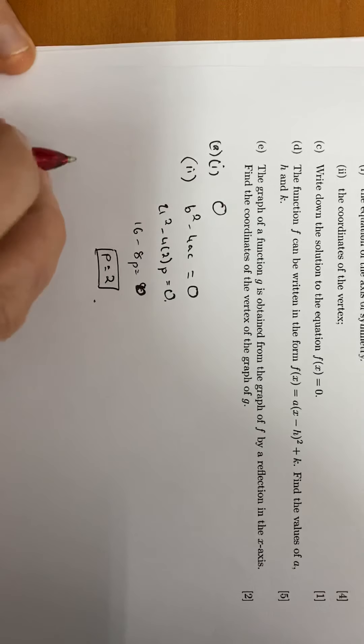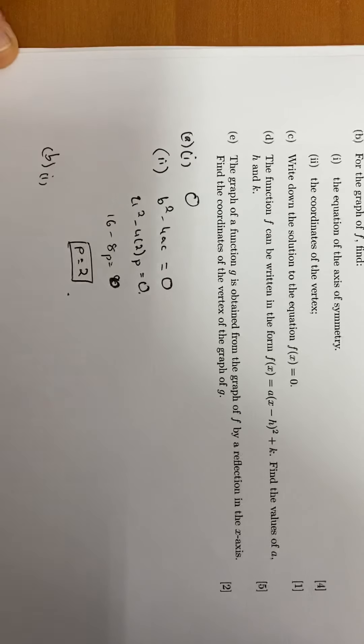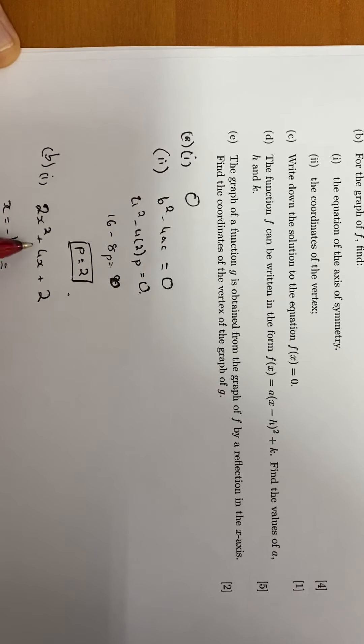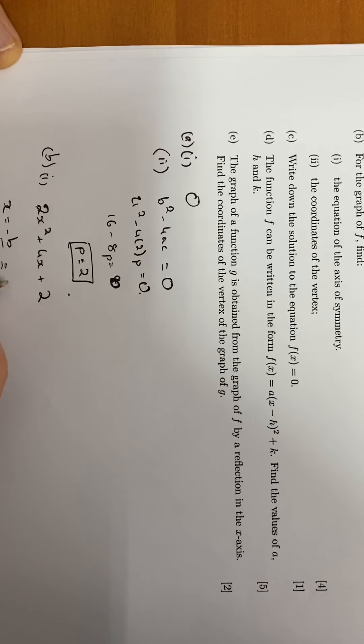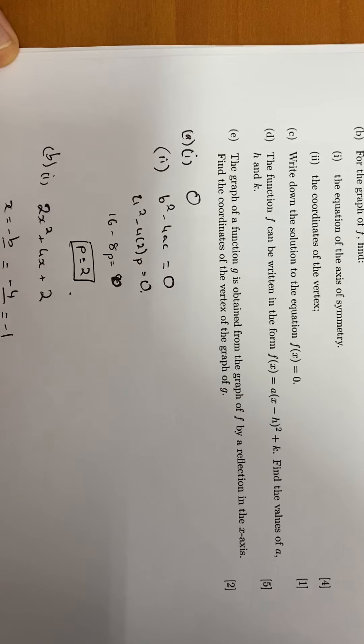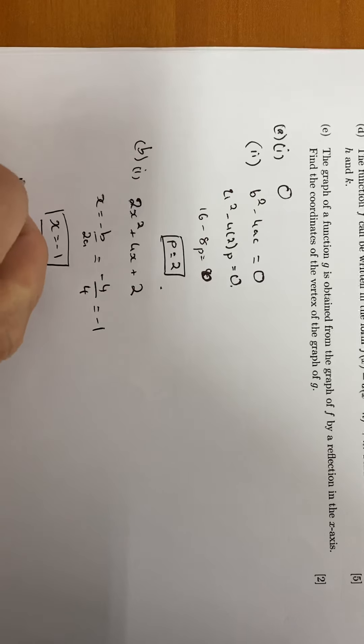Part b, find the equation of the axis of symmetry. There's a formula for this. Here is our equation 2x squared plus 4x plus 2. There's a formula in our formula booklet, so we might as well use it. Minus b over 2a, so that's minus 4 over 2 times 2, which is minus 4 over 4, which is minus 1. So your answer is x equals minus 1. It's a line, so you must include the x equals minus 1.